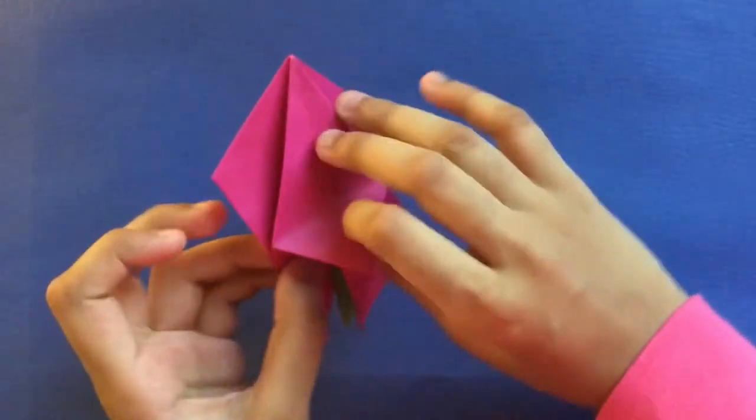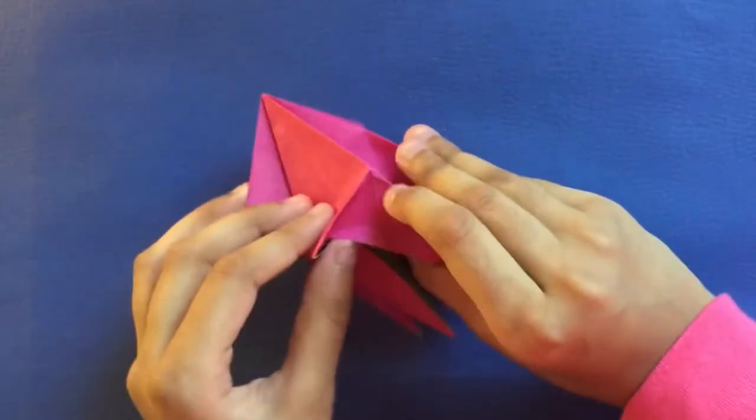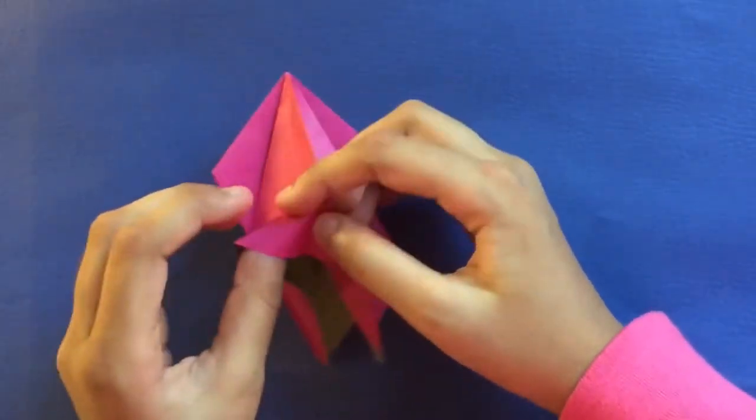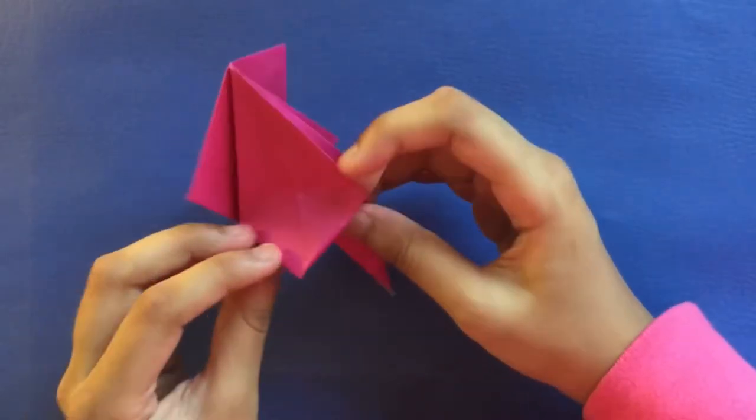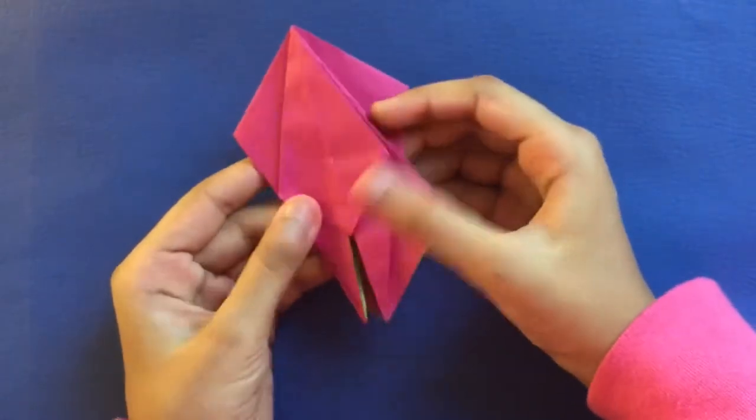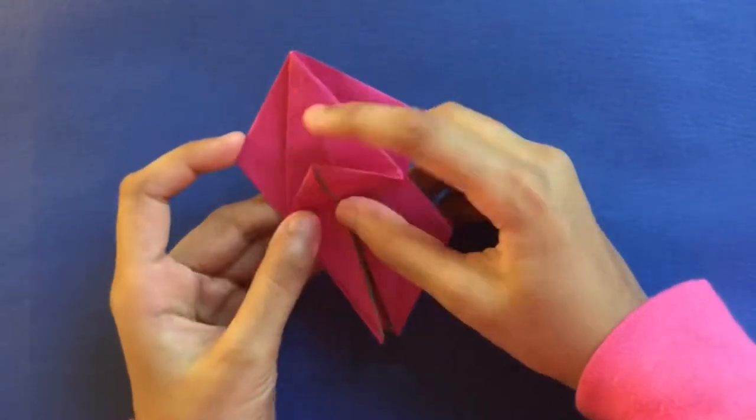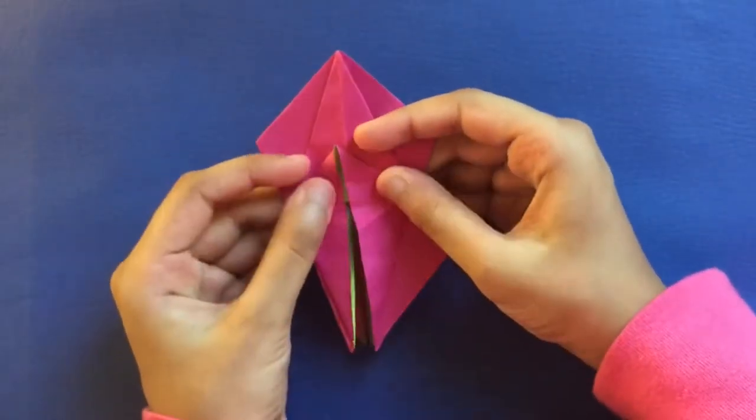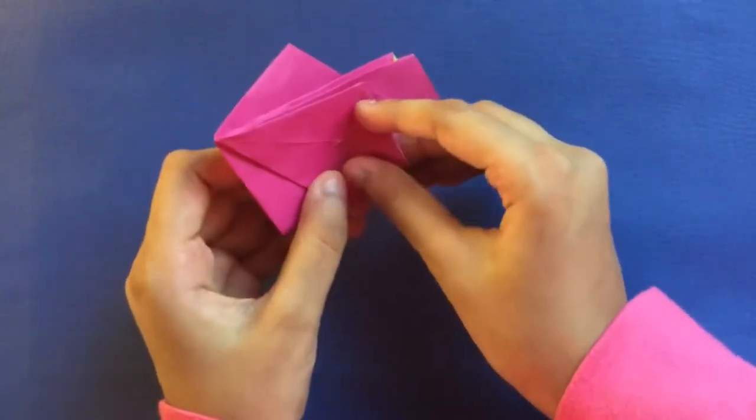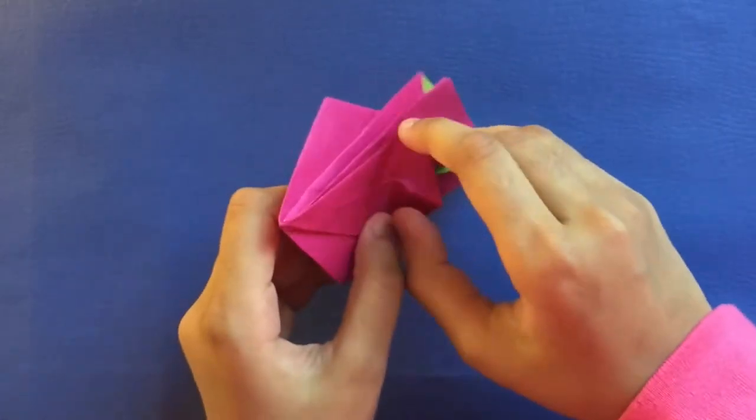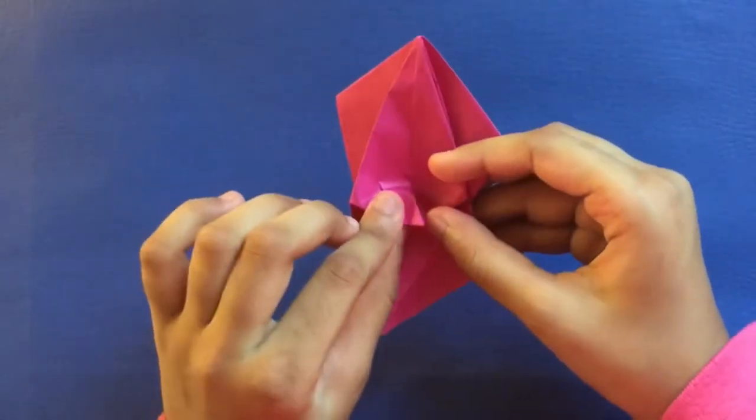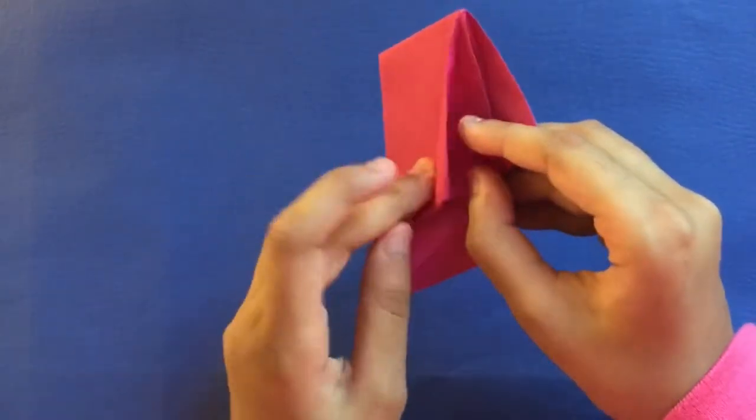Repeat. Oops, this little thing has extended and we don't want it to extend. Let's fold it back down. That's better. Okay, make this crease, mountain crease, mountain crease, and push it over to that edge crease.